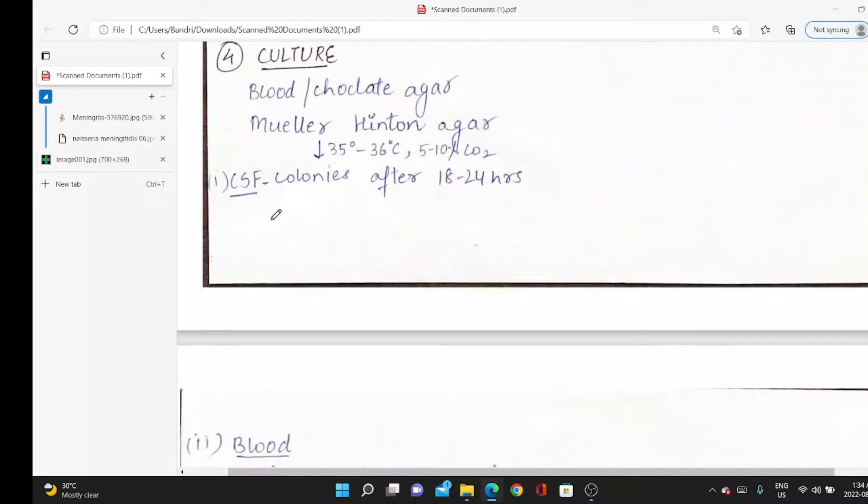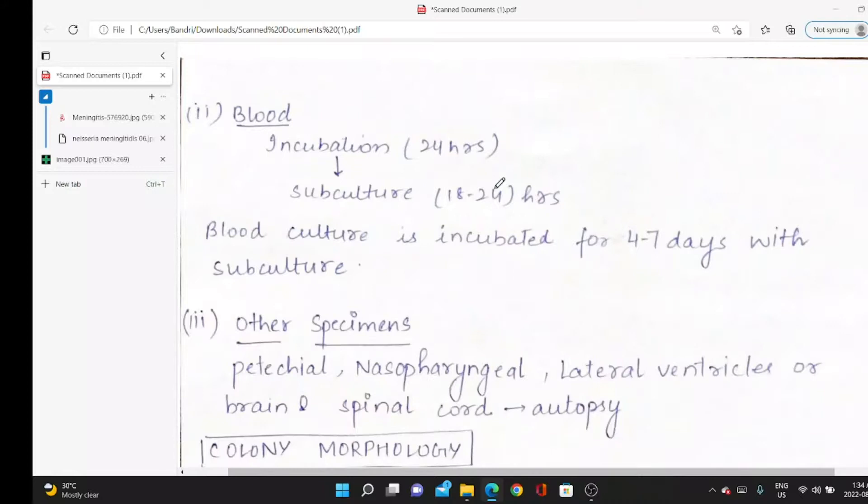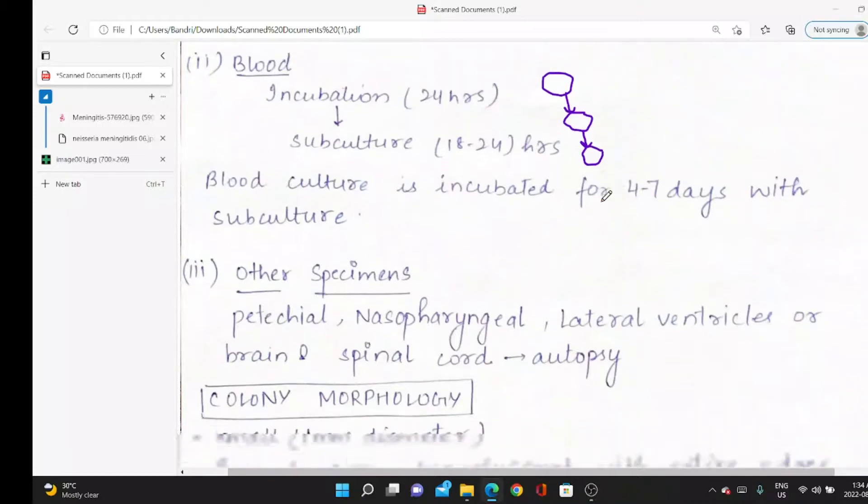Cerebrospinal fluid colonies appear 18 to 24 hours later—after one day, we'll observe. After 24 hours, colonies can be found in blood culture.